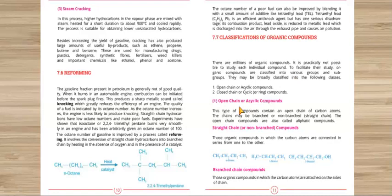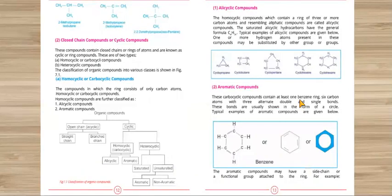In open chain or acyclic compounds, we divide them into straight chain and branched chain. Straight chain compounds have no branches inside, while branched chain compounds do have branches. For example, 2-methylpropane or isobutane is a branched chain compound.